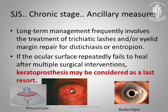Ancillary measures include removing trichiatic lashes if there is simple trichiasis, and correcting entropion with oculoplastic surgery if present. There may be multiple interventions needed. Keratoprosthesis may be considered as a last resort — if tear production is good, Boston keratoprosthesis can be used; if it is a bone-dry eye, then the Pintuchi or modified osteo-odonto-keratoprosthesis will be required.